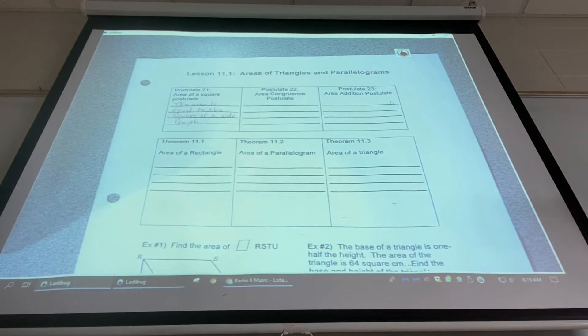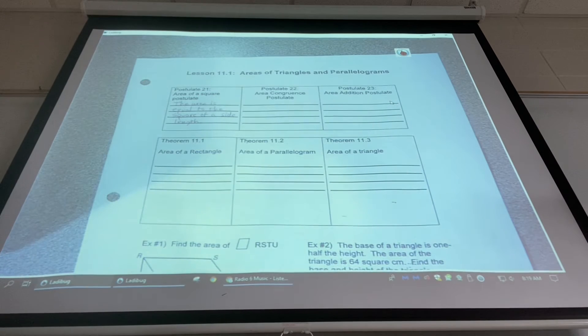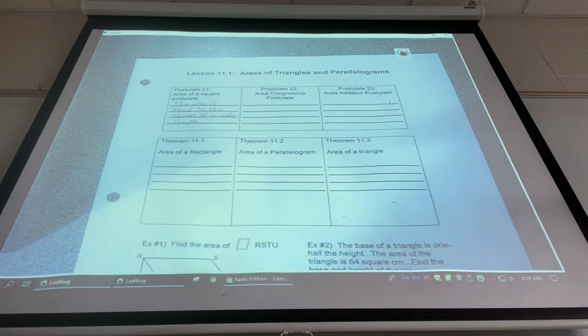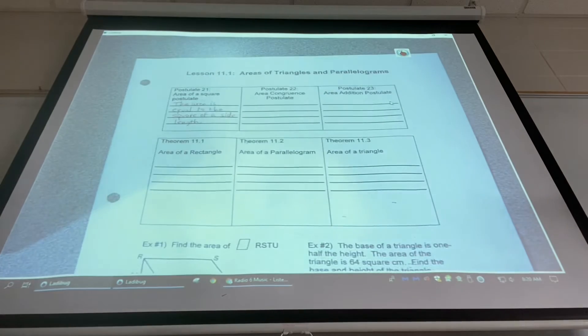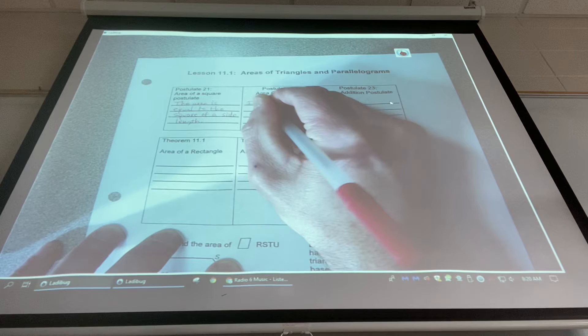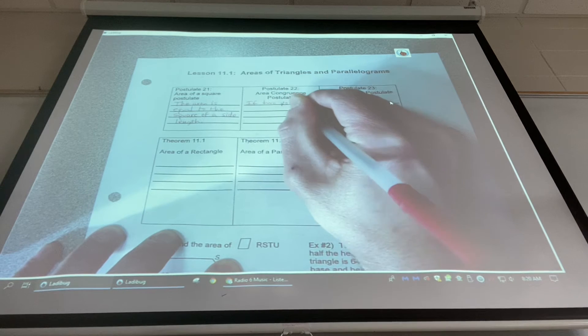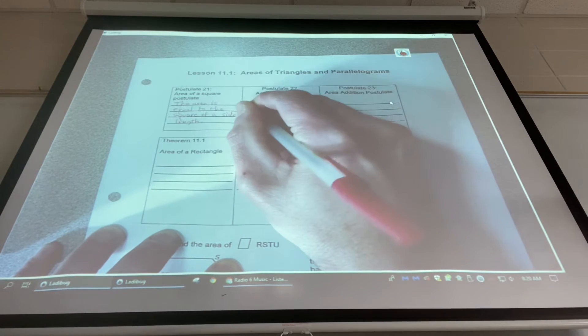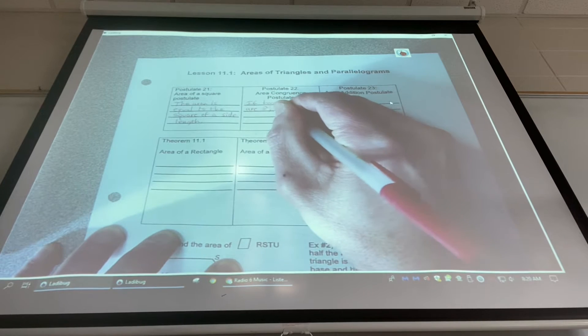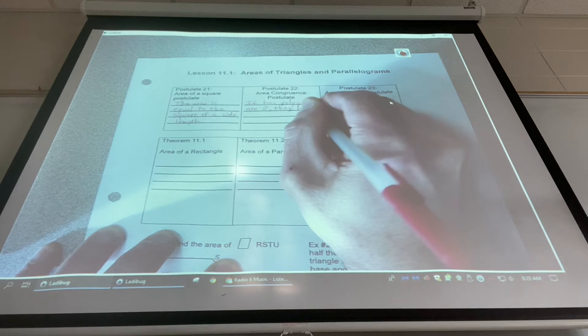If two quadrilaterals are congruent, their areas are also congruent. That's pretty much it. Yeah, that sounds good. If two, but we're going to expand it more generally. So instead of talking about quadrilaterals, we'll say if two polygons are congruent, they have the same area.